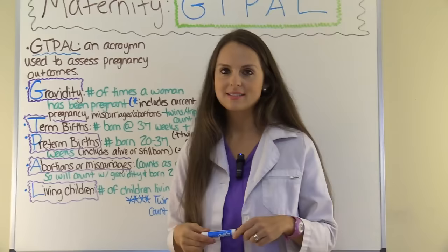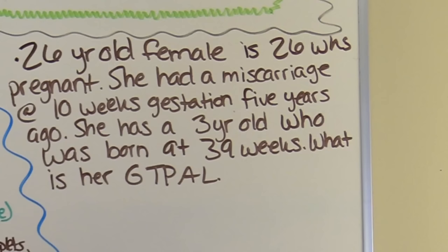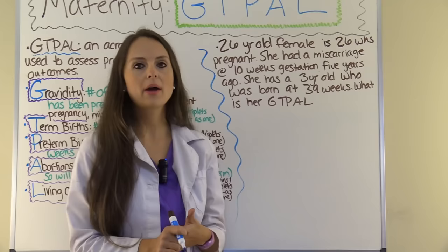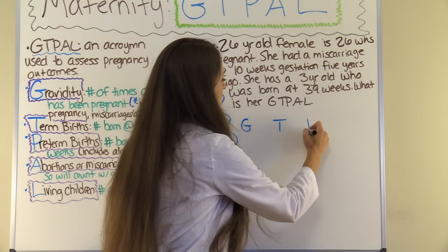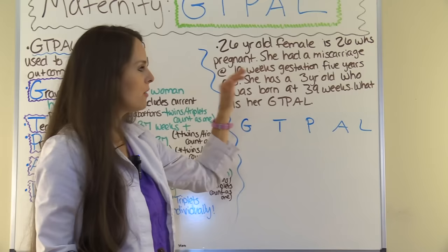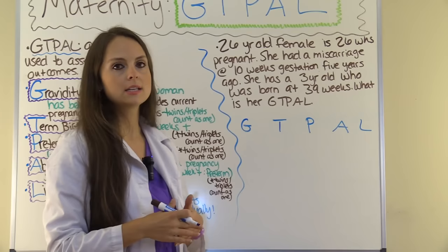Now let's work a problem. A 26-year-old female is 26 weeks pregnant. She had a miscarriage at 10 weeks gestation five years ago. She has a three-year-old who was born at 39 weeks. What is her GTPAL? When solving these scenarios, I like to write out GTPAL, dissect the scenario, tally underneath each acronym part, and then add it up at the end for the complete answer.